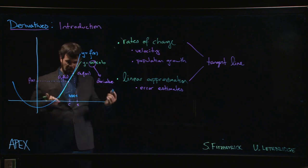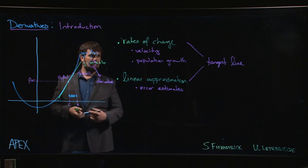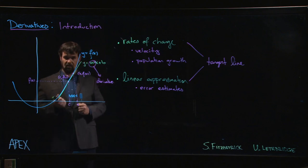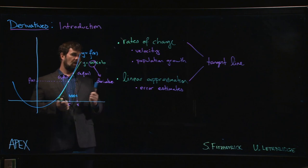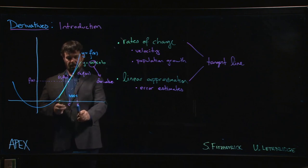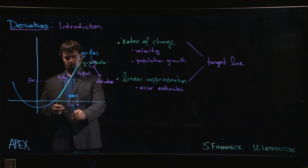That change, delta y over delta x, that's our rate of change, but it's not an instantaneous rate of change, it's an average rate of change over this interval. What the derivative will let you do is shrink the interval down.